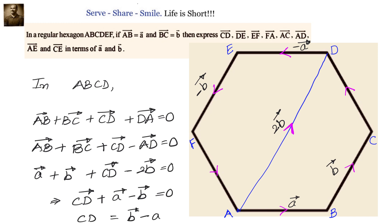Since CD vector equals B vector minus A vector, notice that FA vector is exactly parallel to CD but in the opposite direction. So FA vector will be A vector minus B vector, exactly the negative of CD vector. Just as AB has ED as its opposite, and BC has EF as its opposite, CD has FA as its opposite. So FA vector equals A vector minus B vector.